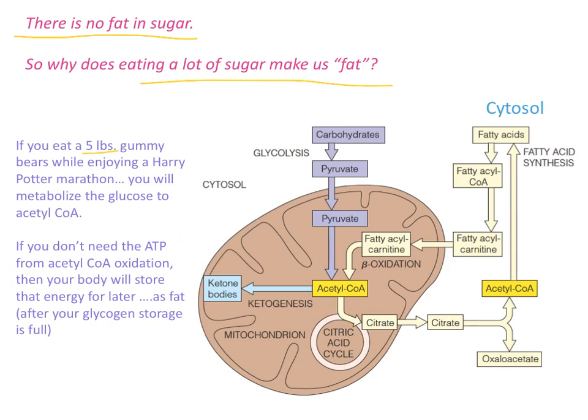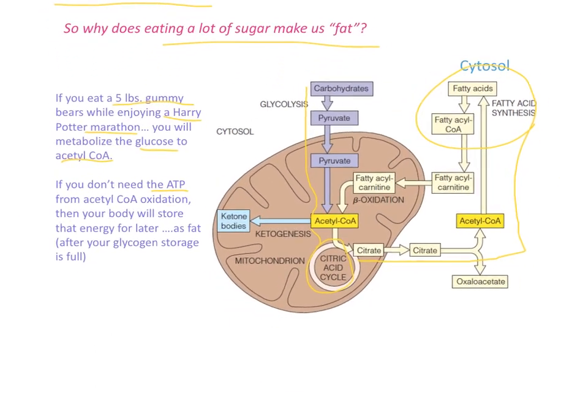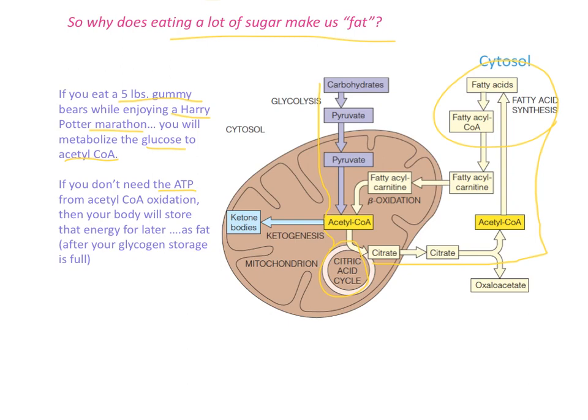The situation we're thinking about is you eat five pounds of gummy bears, which on the package will say fat-free, and then you sit down and watch all the Harry Potter movies. While you're doing this, you're going to metabolize the glucose to acetyl-CoA. If you start with carbohydrate, pyruvate, acetyl-CoA to the citric acid cycle, and you won't need the ATPs that are coming out, so the ATPs are going to help synthesize some fat. We're going to move some of the carbons out, remake our acetyl-CoA, and then do fatty acid synthesis.